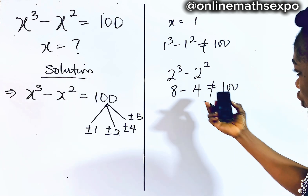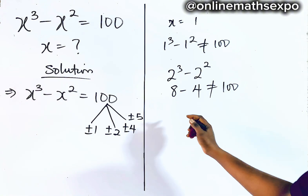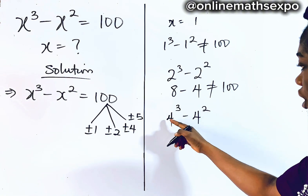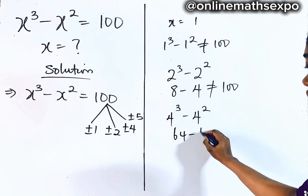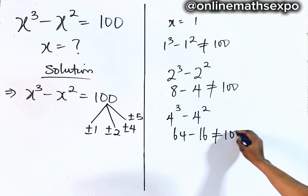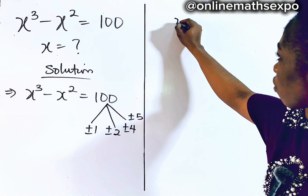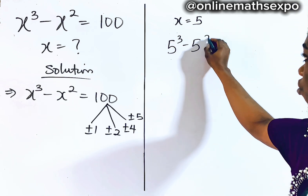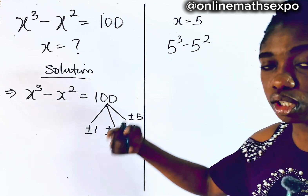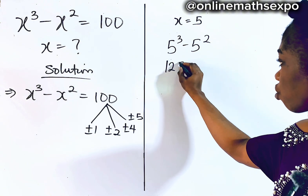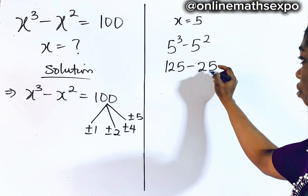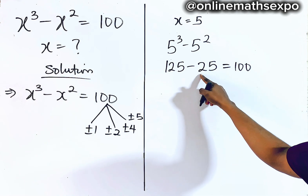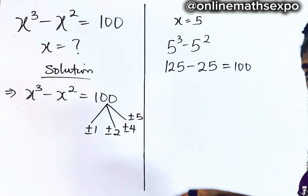Let's try x equal to 4: 4 cubed minus 4 squared gives us 64 minus 16, not equal to 100. Let's try x equal to 5: 5 cubed minus 5 squared gives us 125 minus 25. When you subtract, that gives us 100. So x equal to 5 is a solution.